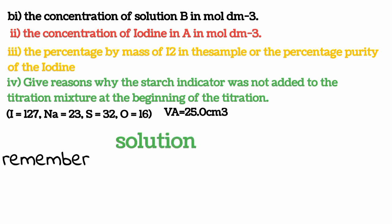The values are given: the atomic masses of iodine, sodium, sulfur, and oxygen are 127, 23, 32, and 16 respectively. Our volume VA is 25.0 cm³.